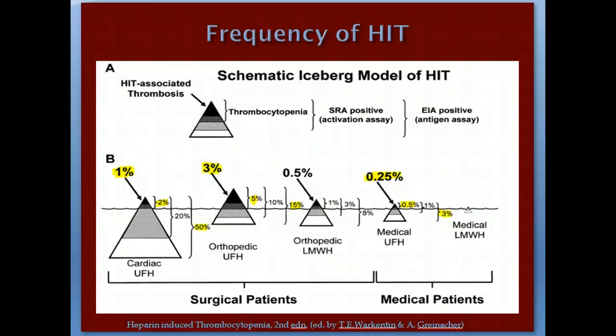The iceberg model of HIT tells us that not everybody who develops a HIT antibody will end up having clinical HIT, because the FC receptor on the platelet has very low affinity for HIT antibodies and most are cleared by lymphocytes. Fewer patients have positive activation assay, fewer have clinical HIT with thrombocytopenia, and fewer still develop thrombosis. Cardiac surgery patients develop more antibodies than other groups, but orthopedic patients are more likely to progress to clinical HIT. Almost 50% of cardiac surgery patients develop HIT antibodies because they are exposed to very high heparin doses and platelet contact with the bypass machine releases more PF4.